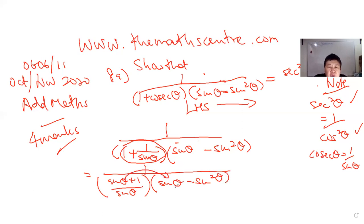So now I'm going to simplify it with 1 over sin theta plus 1, this expression multiplied by sin theta minus sin squared theta. The denominator cuts with the sin theta. So I'm left with sin theta plus 1, or 1 plus sin theta.